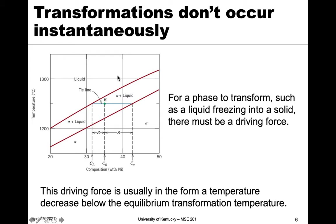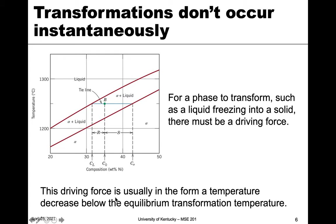Let's go back to a simple phase diagram — the isomorphous system — which has a liquid, a liquid-plus-solid region, and then pure solid below. For a phase to transform, such as a liquid freezing into a solid, there has to be a driving force. It can't just happen randomly. We'll only form alpha if we're below the liquidus, because the phase diagram tells us that alpha should exist at that given temperature — that is our driving force.